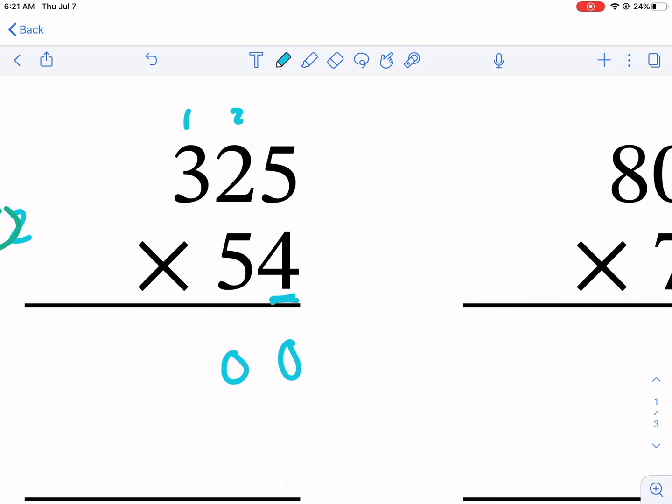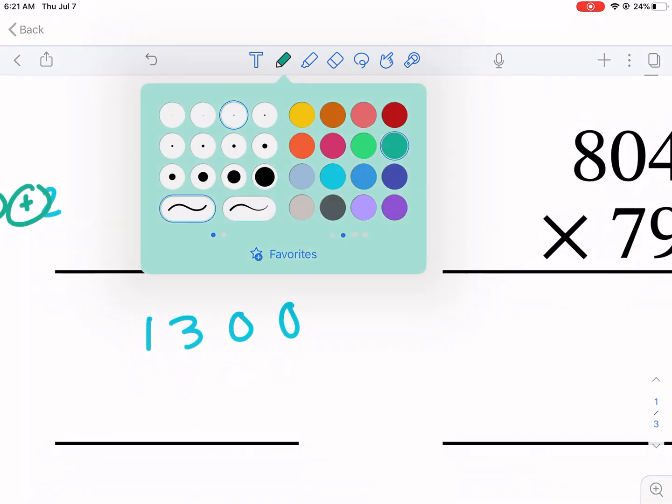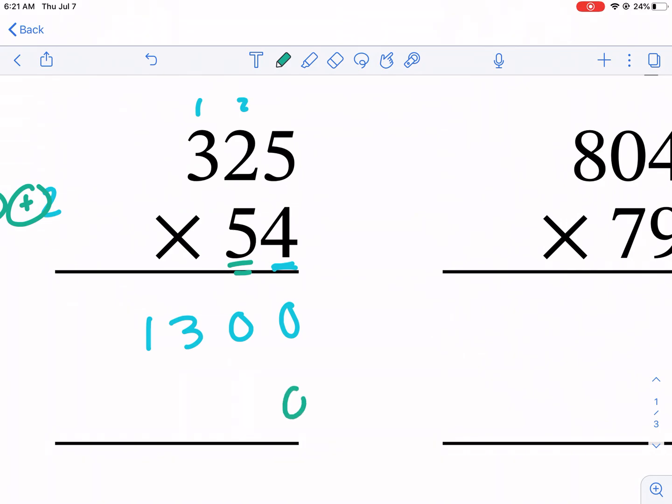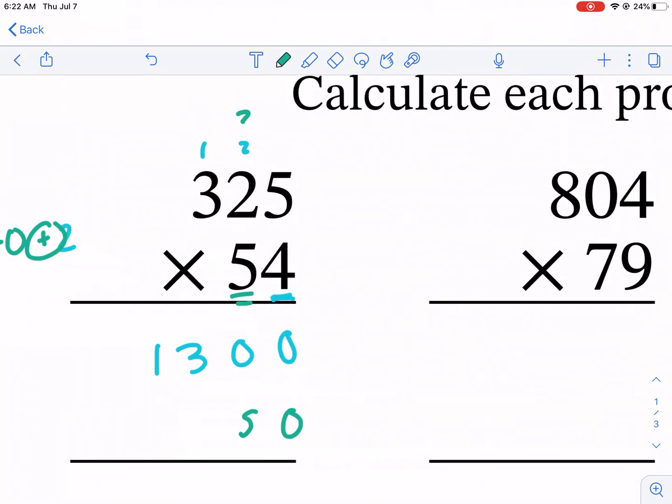Then we move on to the tens place - that represents 50, so we need to make sure we put the zero down first, and then we can go ahead and start multiplying normally. We have 5 times 5 is 25, 5 times 2 is 10, that's 12, 5 times 3 is 15, that's 16.